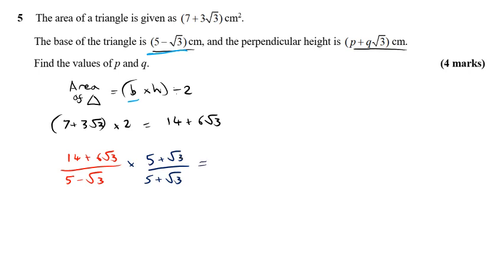So when I do that on my numerator, I'm going to get 70 plus 14 root three plus 30 root three. And then here I'm doing six root three times root three.